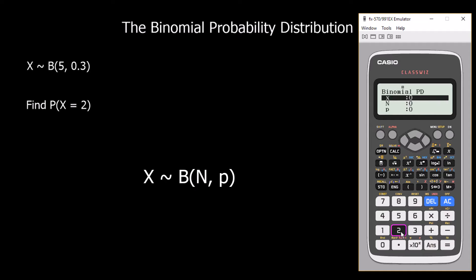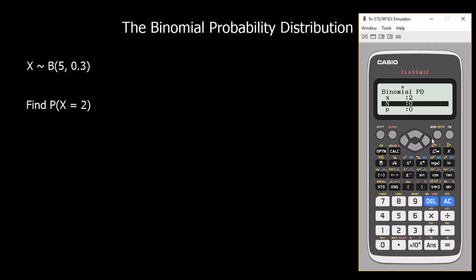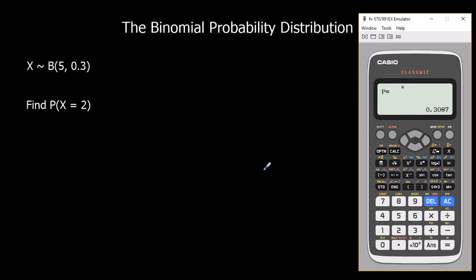We go for the variable option. X is how many successes we want, which is two. N is how many trials there are, which is five. P is the chance of success each time, which is 0.3. Click equals and equals again, and that tells us the chance of having two successes is 0.3087 — and there's our answer.